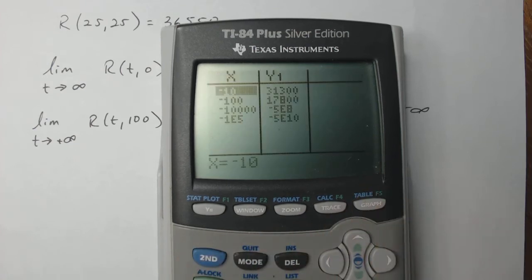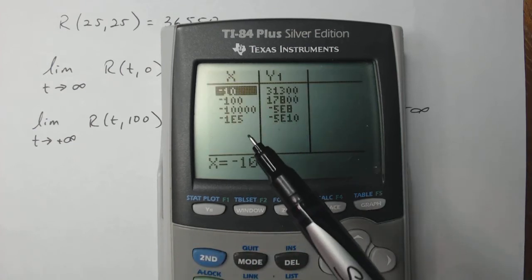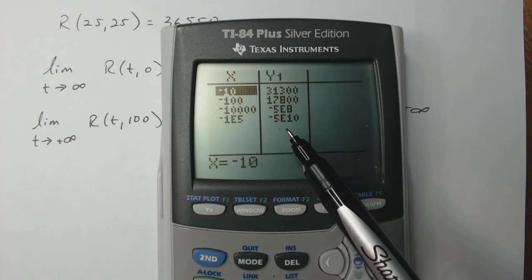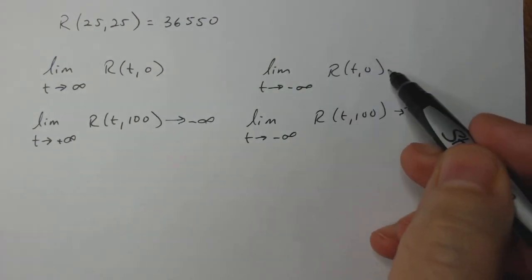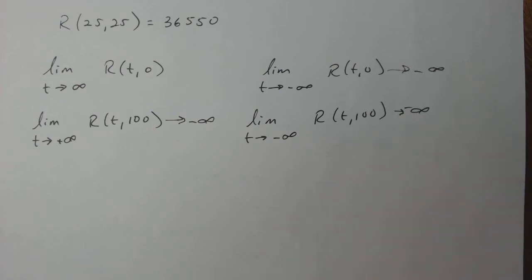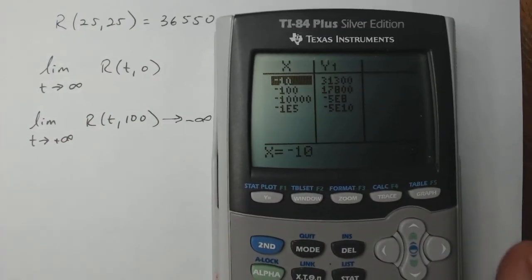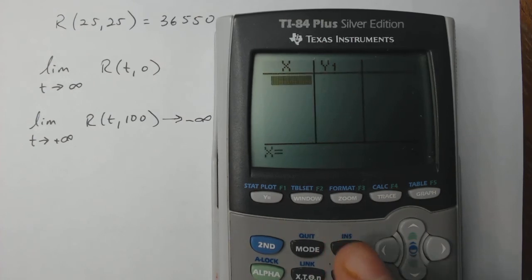So if I go back here, I've already checked towards negative infinity and you can see this goes down to negative infinity. So as T goes to negative infinity, that goes off to negative infinity.